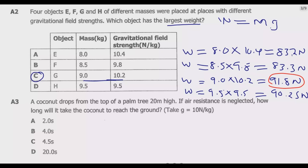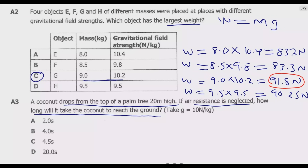Question A3: A coconut drops from the top of a palm tree 20 metres high. If air resistance is neglected, how long would it take the coconut to reach the ground? Take gravity to be 10 N/kg. We are given the height and gravitational field strength and asked to find the time. We use the equation of motion: time equals the square root of 2 times height divided by gravity.